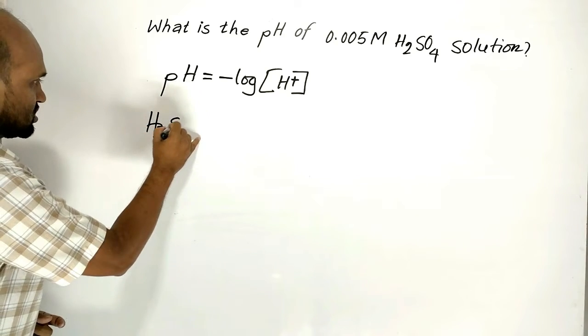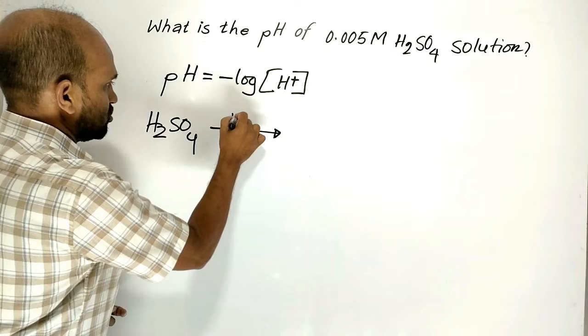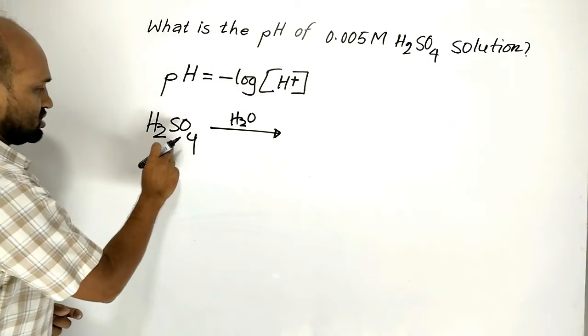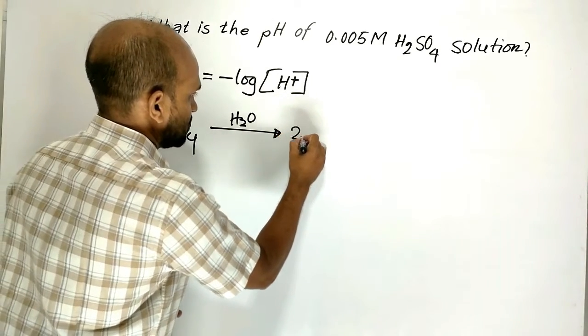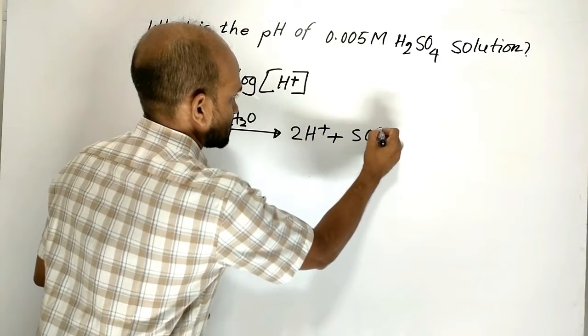Sulfuric acid is a strong acid, so in water it dissociates fully to form two protons and sulfate ion.